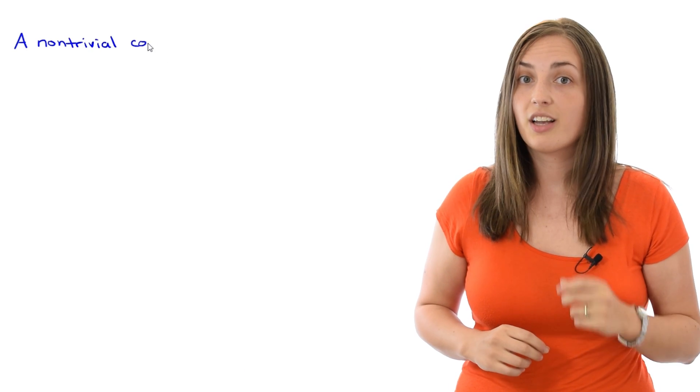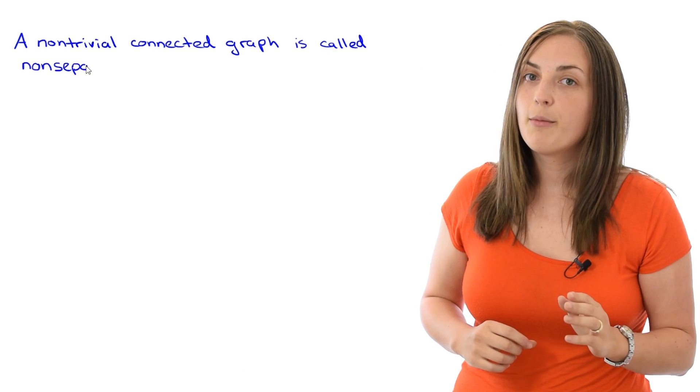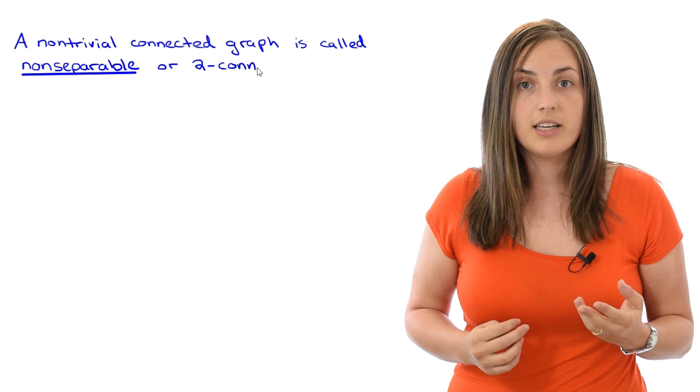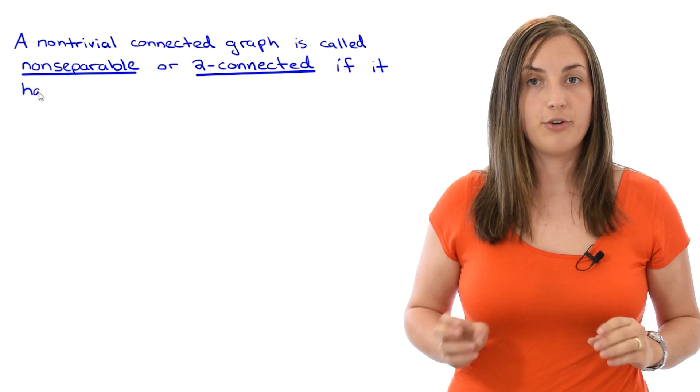Remember that if you have a connected graph, but you have a cut vertex, removing that cut vertex will disconnect the graph. This sort of brings up the next definition. A non-trivial connected graph is called non-separable, or 2-connected, if it has no cut vertices.